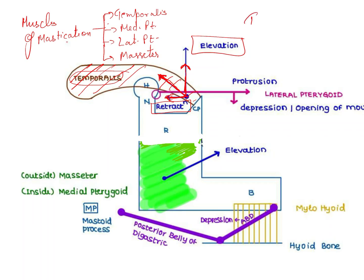So the temporalis muscle performs two functions: elevation and retraction. You don't need to memorize all of this — just understand the path of the vector formed by that particular muscle and break it into two components, and you will get the answer.